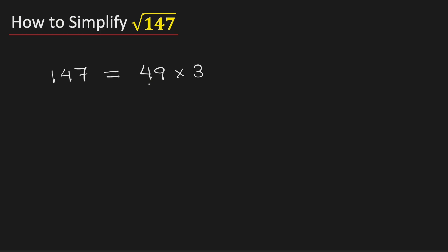We have written this way because 49 is a perfect square which is a square of 7, and 3 is a square of no number.